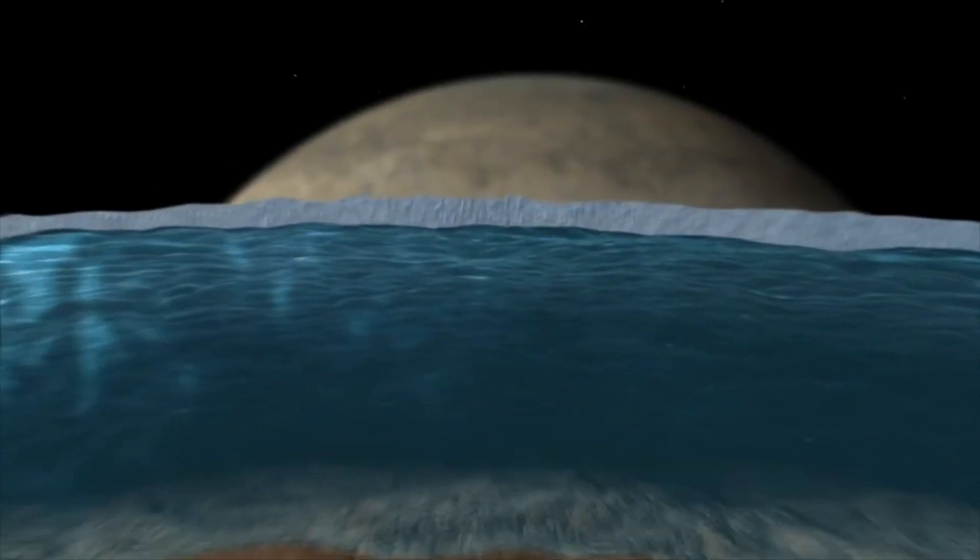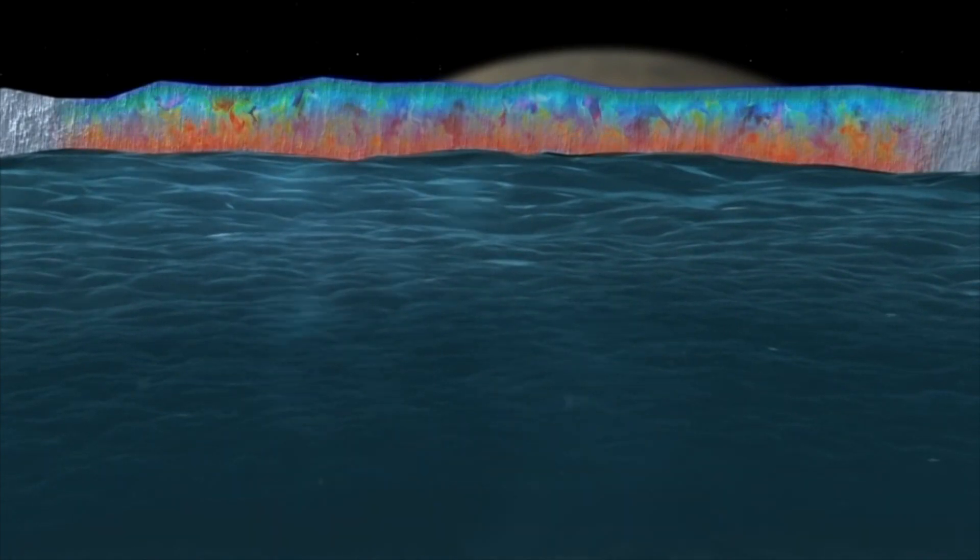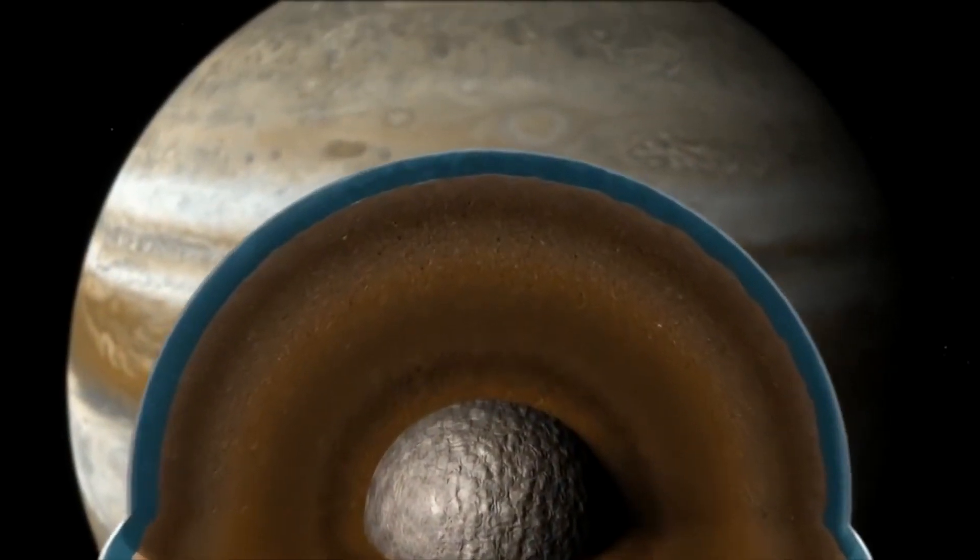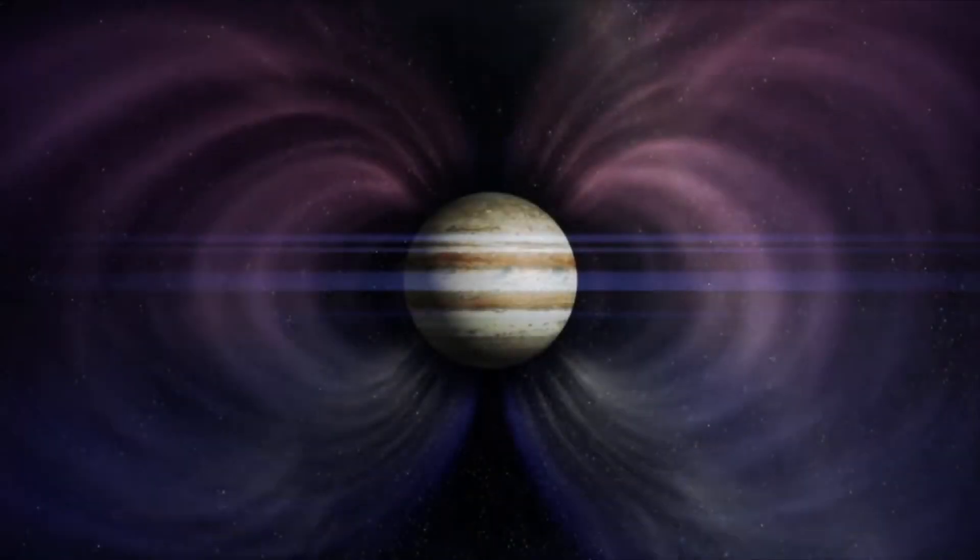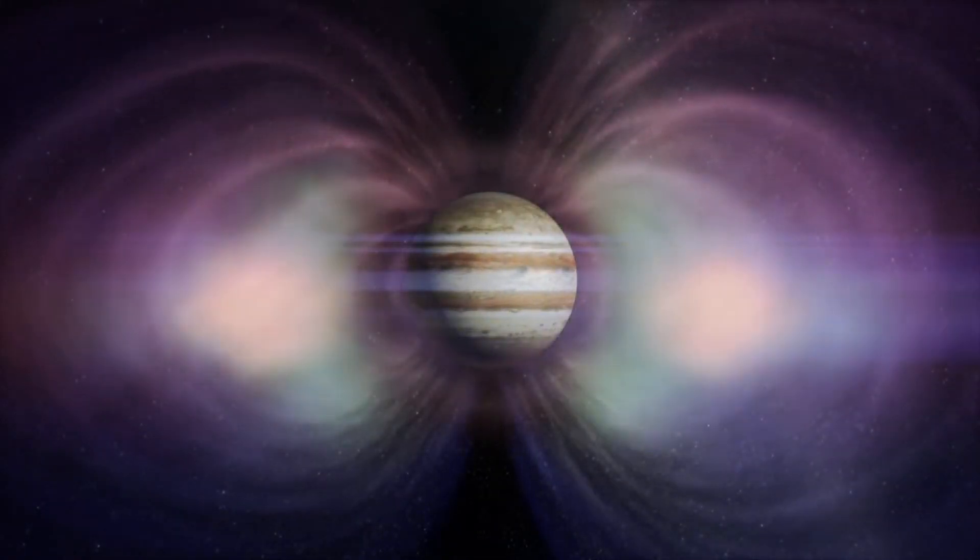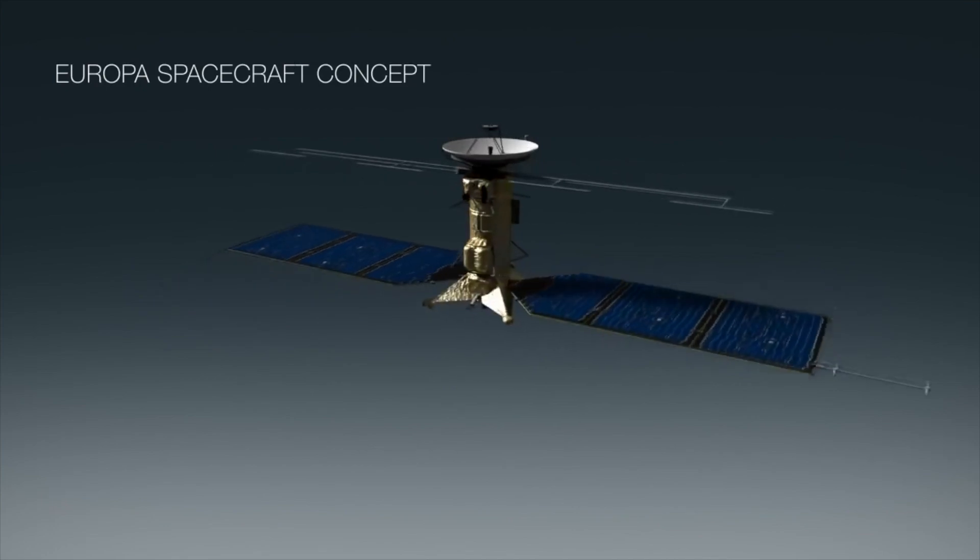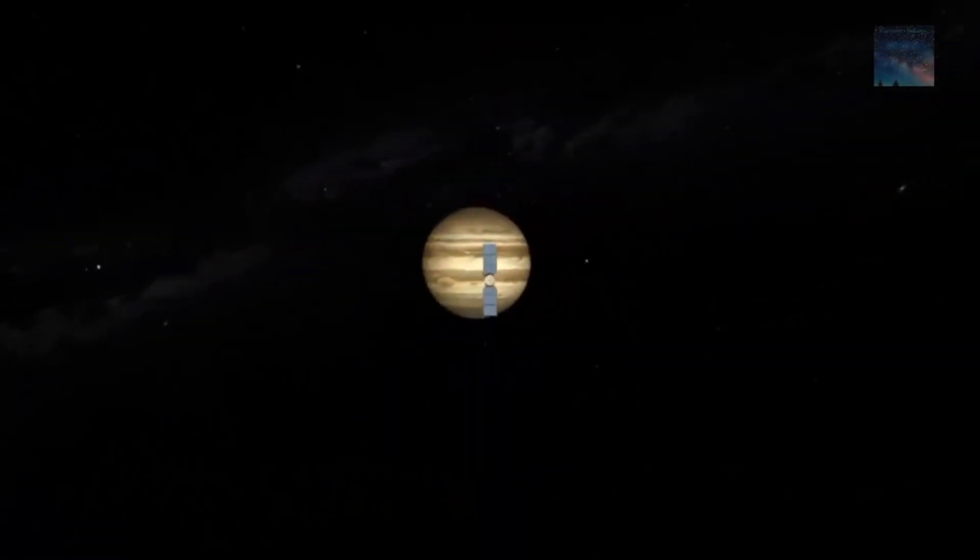Now, scientists already know that Europa has water. It's covered in a 25-kilometer thick crust of ice that protects the liquid ocean beneath from the radiation that bathes Europa's atmosphere. This radiation actually prevents spacecraft from getting close enough to study Europa's oceans.